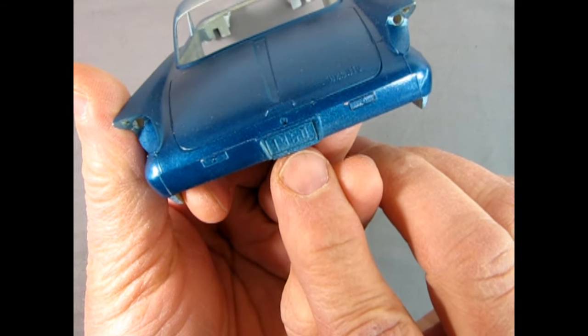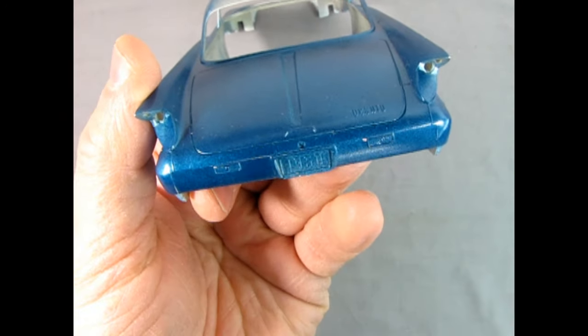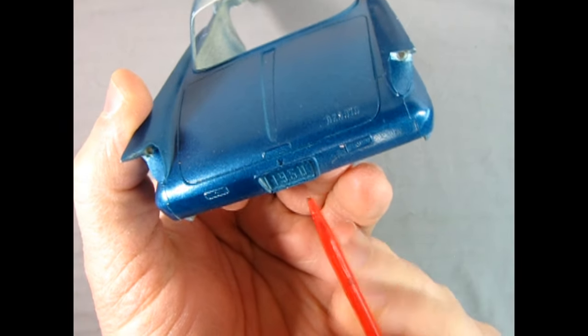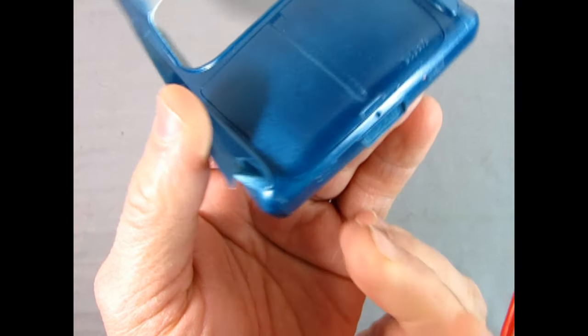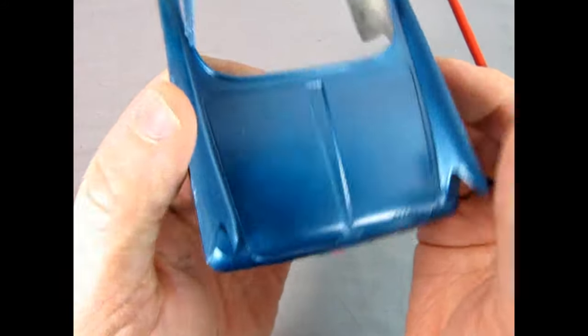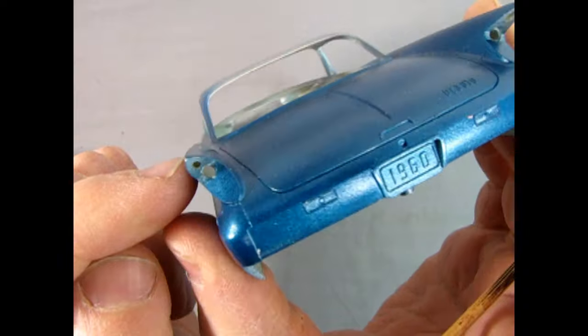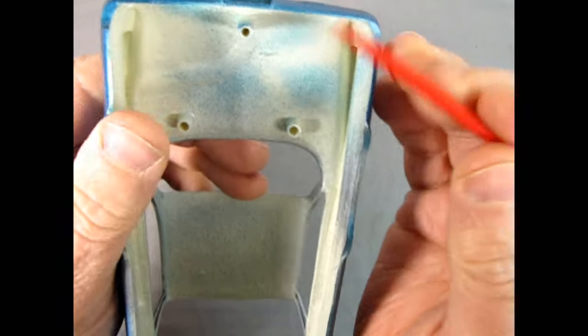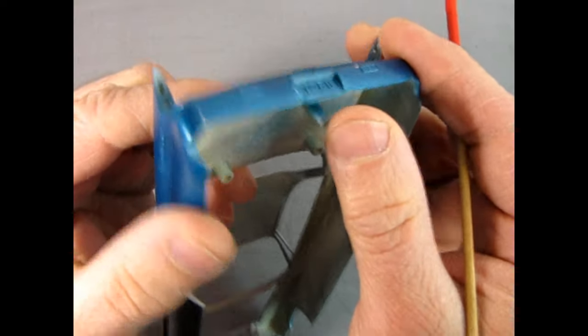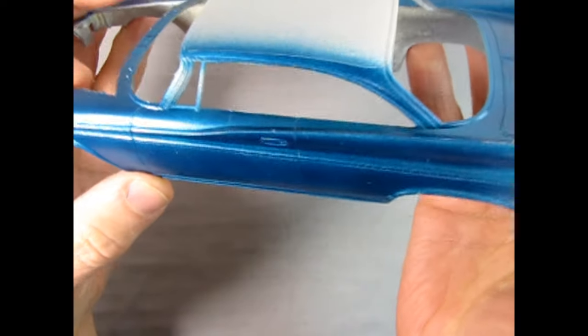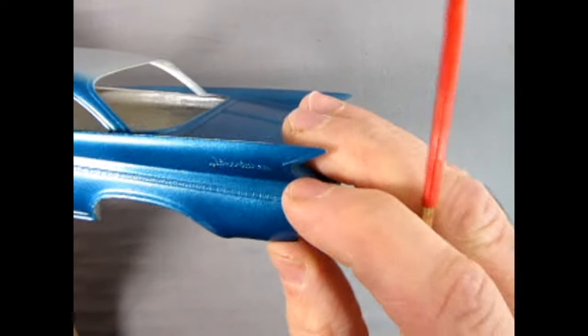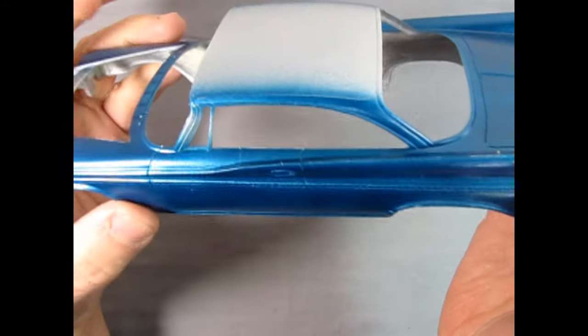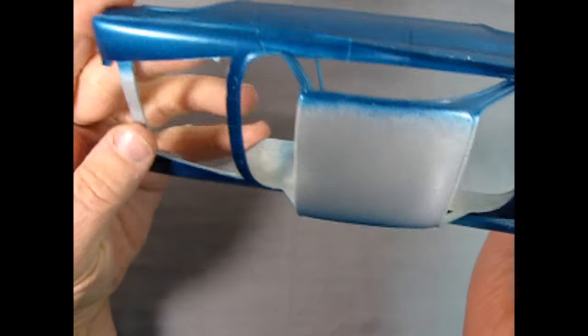You also have all the emblems. There's that license plate I was talking about with a raised 1960. You can paint this if you're doing a showroom display model. Got your backup lights in here as well, molded in place. Really nice molding on here. There are some seam lines running up inside. You can see the holes in the back of the fin where the tail lights are going to go in. We've got this nice trim all the way along the edge of our DeSoto as well as Adventurer script that's raised up here.